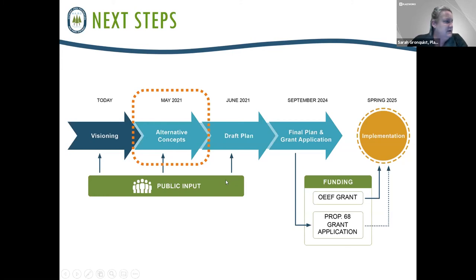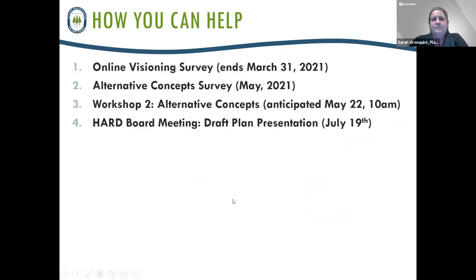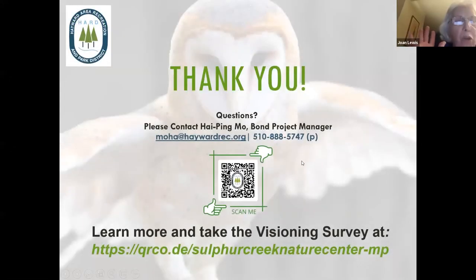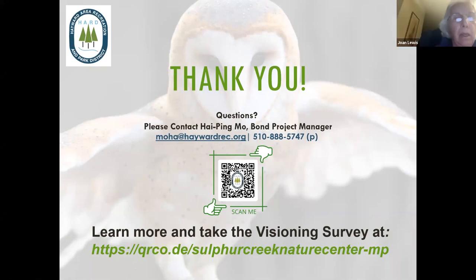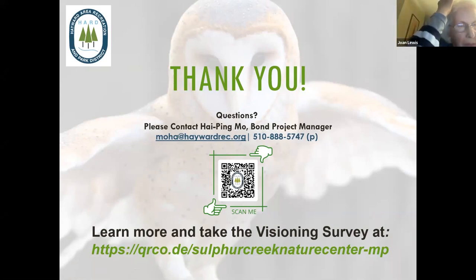If you have any questions about things we talked about tonight, you can participate in some of the other ongoing efforts — we still have a visioning survey. We will be offering a survey when the alternative concepts are ready. You're all invited to the HARD board meeting draft plan presentation on July 19th. For further thoughts and comments you can contact Haiping who is the project manager, and you can scan the QR code to go right to the visioning survey. Regarding the timeline, the grant application is going to be submitted in September of this year — not 2024. It makes a lot more sense that way.